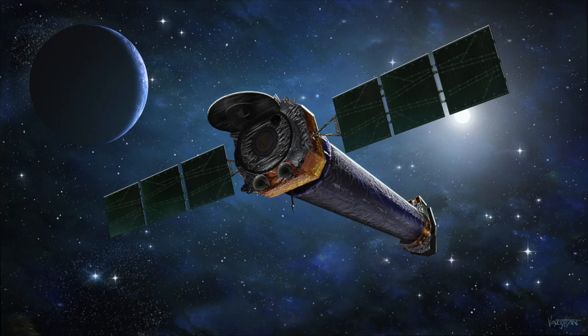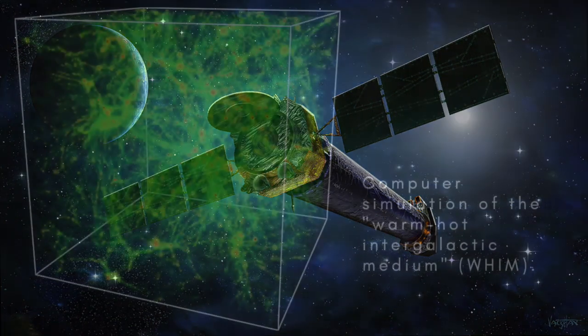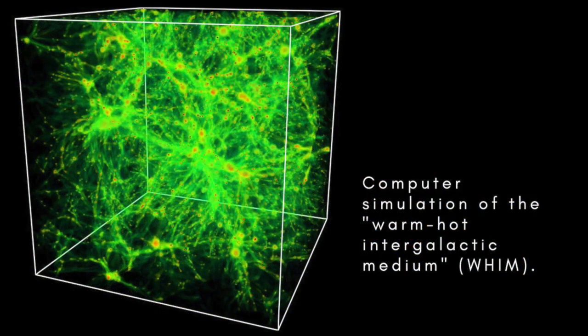One leading theory is that it consists of huge filaments of gas in the space between galaxies and clusters of galaxies. These vast threads of gas, with temperatures of anywhere from 10,000 to 10 million degrees Kelvin,